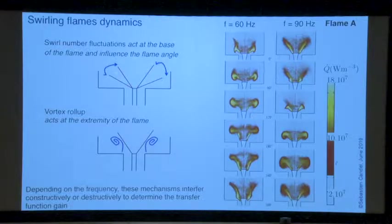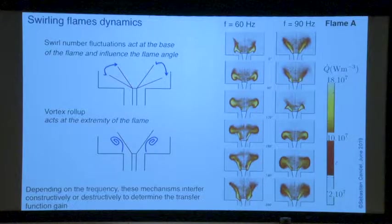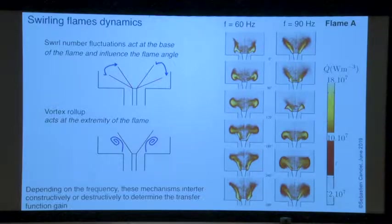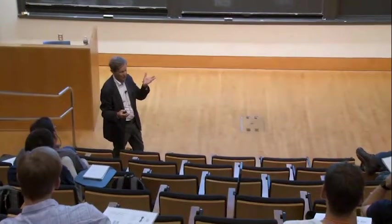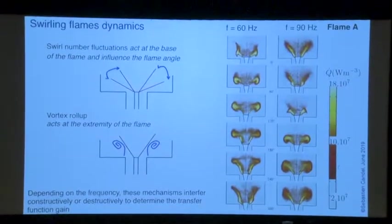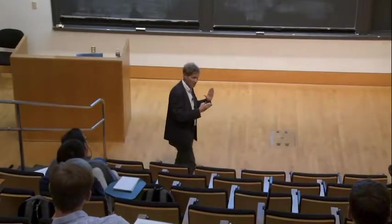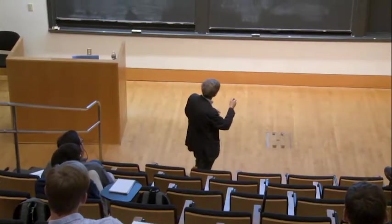On one hand we have a process where the angle of the flame is changing, and the other process is vortex roll-up. Everything depends on the phase of these two processes. What is seen here is basically 60 Hz and this is 90 Hz. It is possible to calibrate the intensity measured with a photomultiplier and give it in terms of watts per cubic meter. Some regions have very high heat release — on the order of 10^8 W/m³ — and there are lower levels. This is done by chemiluminescence with Abel transform to get the slice through the flame.